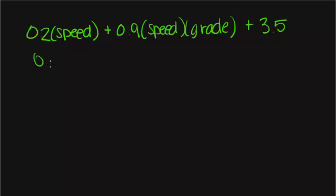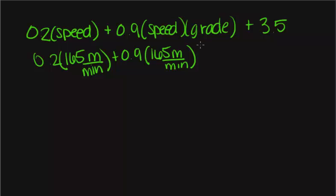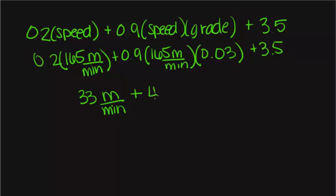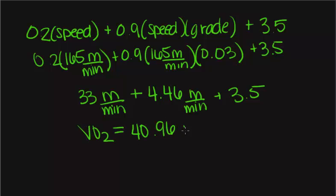Woman B was running at a speed of 165 meters per minute and up a 3% grade, so that's 0.03 plus 3.5. When we do the math, we get 33 meters per minute plus 4.46 meters per minute plus 3.5, giving us a total VO2 uptake of 40.96 milliliters of O2 per kilogram minute.